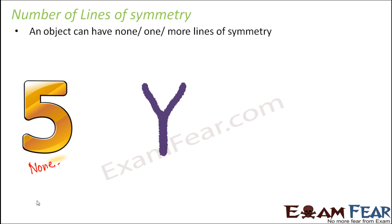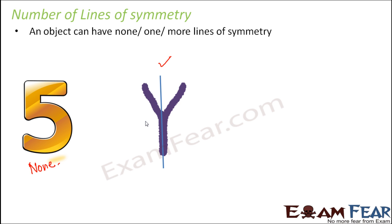Let's look at the alphabet Y. How many lines of symmetry does it have? In case of Y, a vertical line of symmetry divides it into two equal halves — the right side and the left side are exactly identical, and if you fold the paper along this line, the two parts would exactly overlap each other. So it has one vertical line of symmetry. It does not have a horizontal line of symmetry, as that doesn't divide it into two equal halves. So the alphabet Y has one line of symmetry.